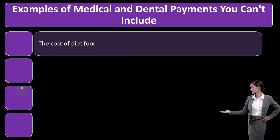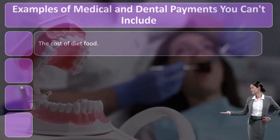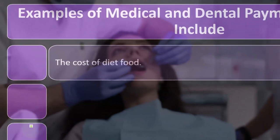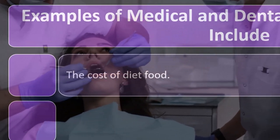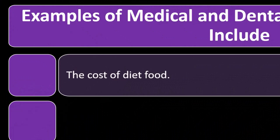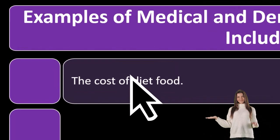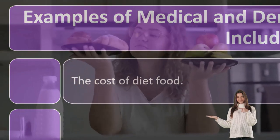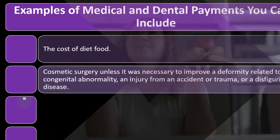Now let's look at examples of medical and dental payments you can't include. Remember there's a lot of gray area here. The IRS has tried to whittle down the list. For example, the cost of diet food — because the IRS included obesity as a disease, people would say the food they buy should be deductible, which would be quite messy.